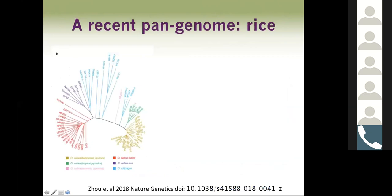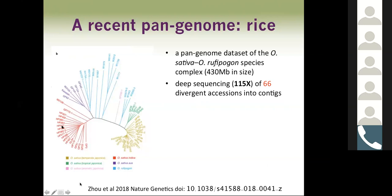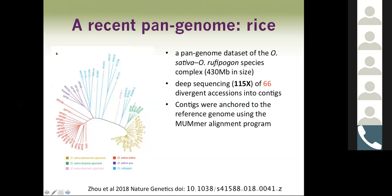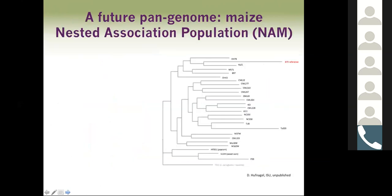In comparison to a microbial genome, a recent pan genome came out in rice this year. It comprises a pan genome data set of the reference Oryza sativa japonica to the Oryza rufipogon species complex. The rice genome is approximately 430 megabases in size. They deep sequenced to 115x coverage 66 divergent accessions of rice into contigs. These contigs were anchored to the reference genome using Mummer, and predicted genes in contigs were aligned against the reference genome with BLAST to determine presence/absence of genes.